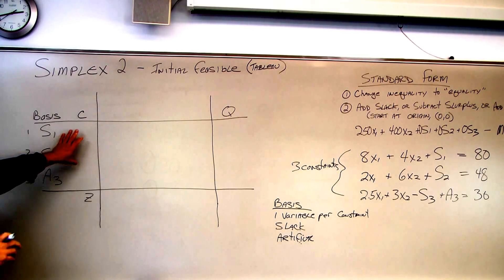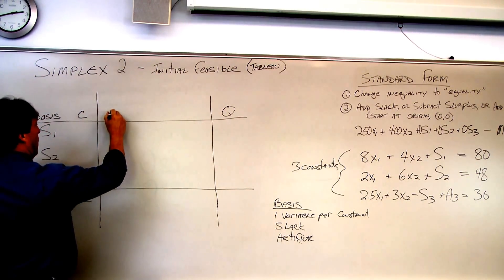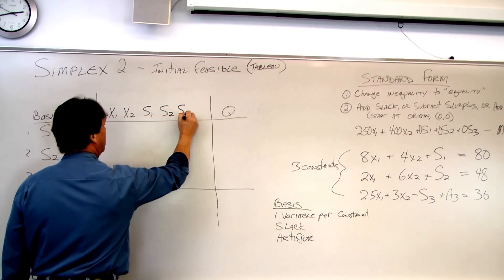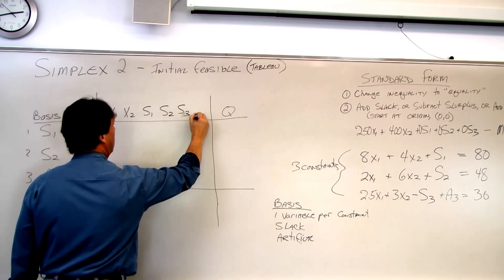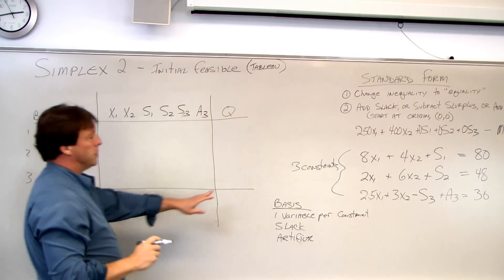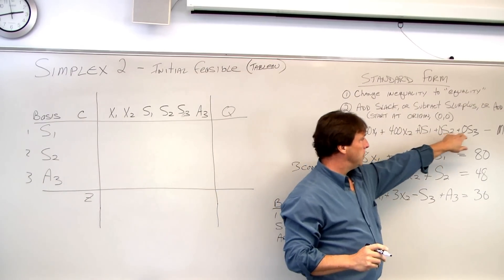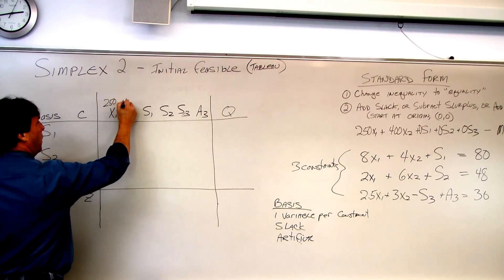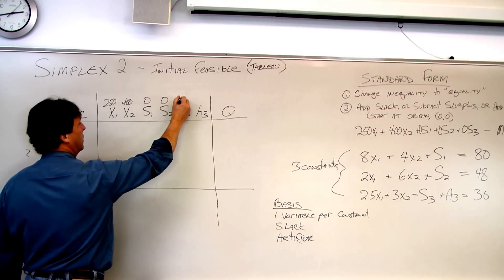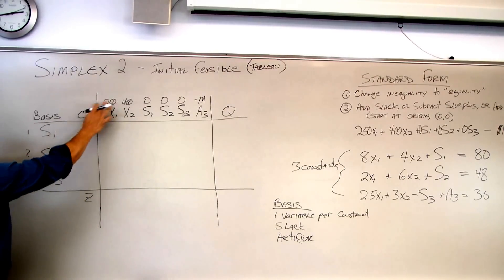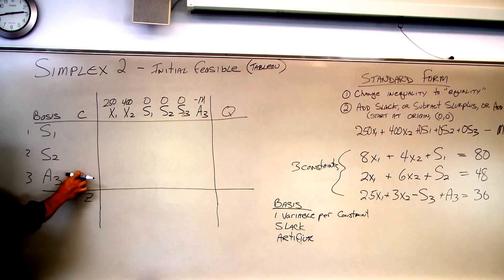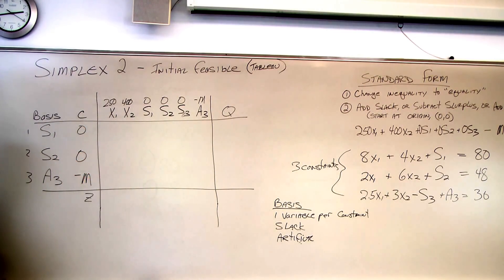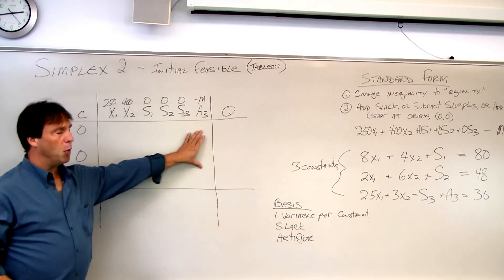Next, we bring our objective function and put it up top. We have x1, x2, s1, s2, s3, and a3. The coefficients are 250, 400, 0, 0, 0, and negative M. We take those coefficients from the objective function and put them in our basis column, giving us 0, 0, 0, 0, and negative M.